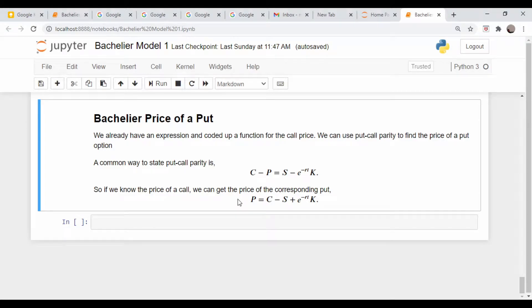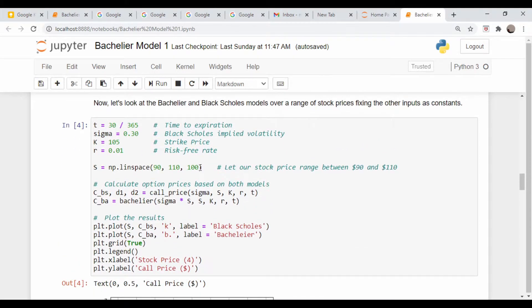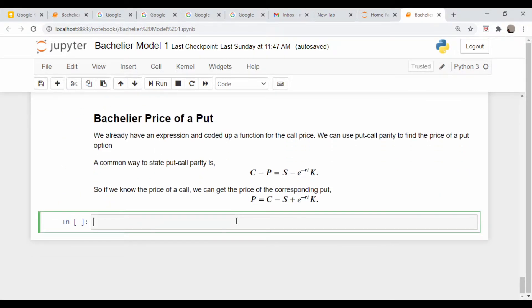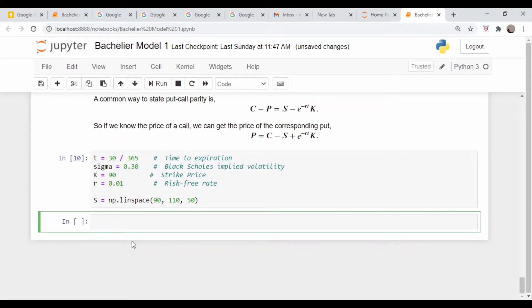Let's take all of this code and paste it down here. Our stock price is going from 90 to 110. Let's adjust our strike price to 90 instead of 105, and we probably don't need to do 100 points here, let's just do 50. Does that run? Yes.